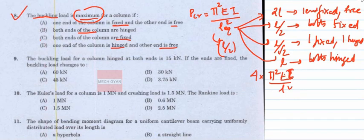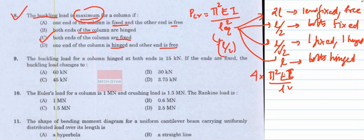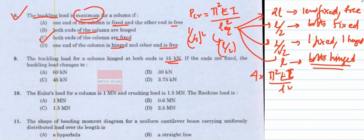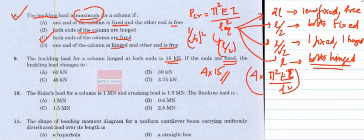So the maximum buckling load occurs when both ends are fixed (L_eq = L/2), giving 4 × π²EI/L². One end fixed, one end free gives only 1/4 the load. Both ends hinged gives the reference load π²EI/L², and both ends fixed gives 4 times that. The answer is option C.